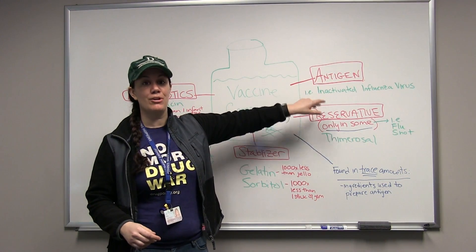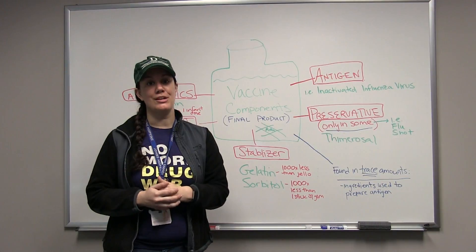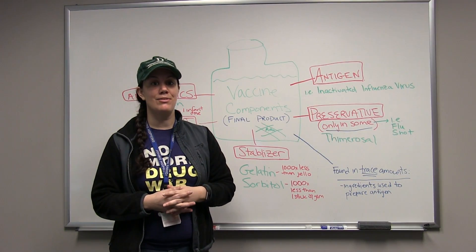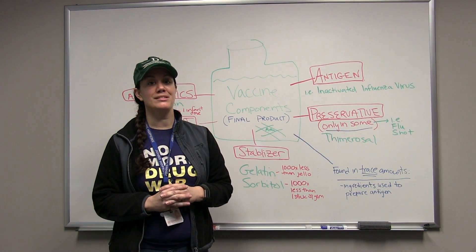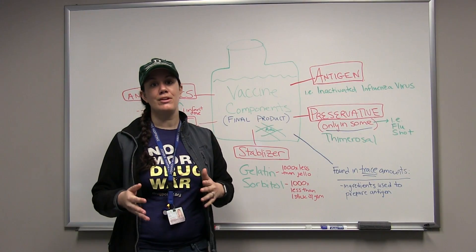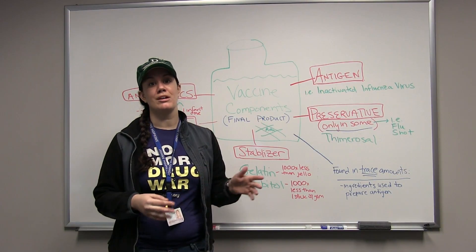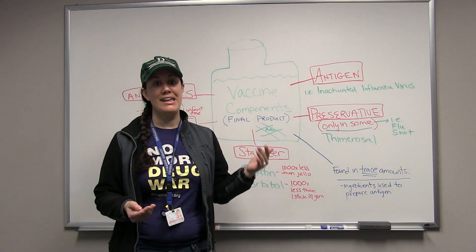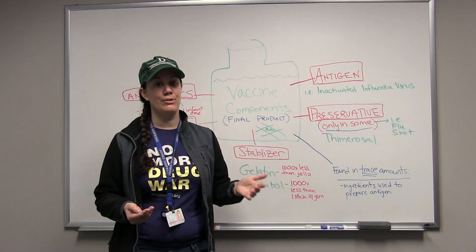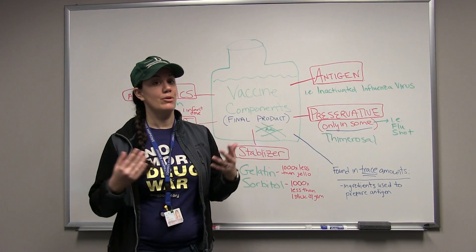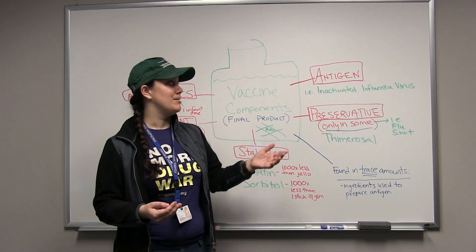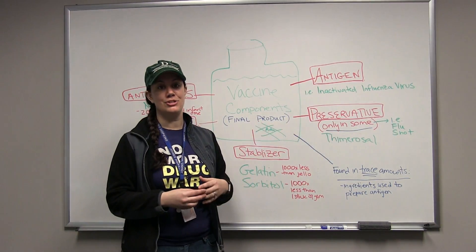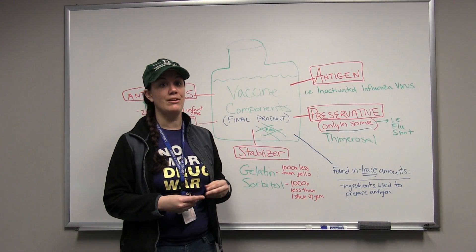So the first category is our antigen. One example of an antigen would be the inactivated influenza virus. In another video episode we're going to talk about what inactivated flu is, how we inactivate flu, and what that process is. But just know for now that that's one example of an antigen found in a vaccine.